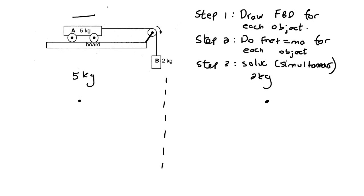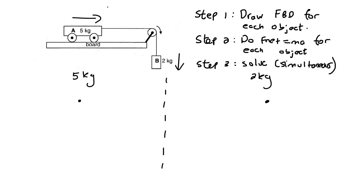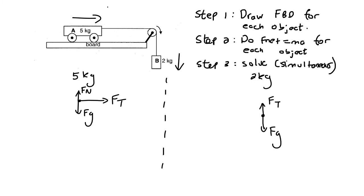Some students say this one's going this way and this one's going that way — but how could that happen? They are connected with a rope, so they have to follow the same pathway. On the five kilogram object, there's a tension force, gravity, and a normal force. Normally there would be friction acting to the left, but they told us there is no friction. For the two kilogram object, there is no normal force because it's not touching the surface. The only forces are gravity pulling it down and tension in the rope slowing it down.